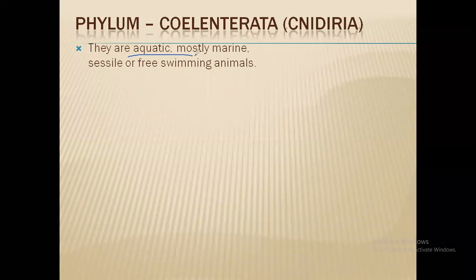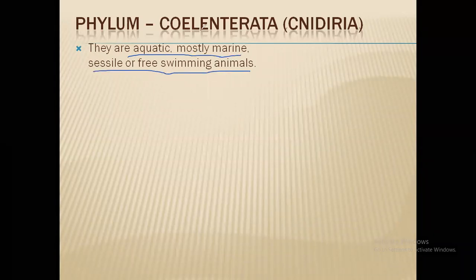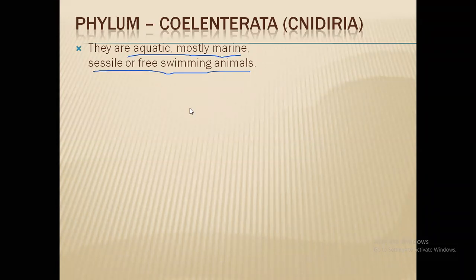The first point is they are aquatic, mostly marine, sessile or free-living or free-swimming animals. Aquatic means they are found in water bodies. Mostly marine means they are generally found in salt water bodies like oceans and seas. Sessile means their body does not possess any kind of hard structure generally, and they can also be free-swimming, meaning they are not attached to any surface, unlike sponges.